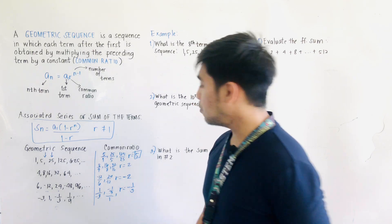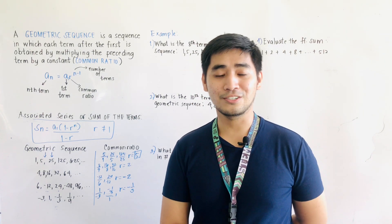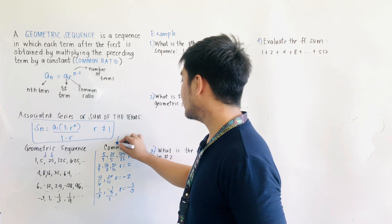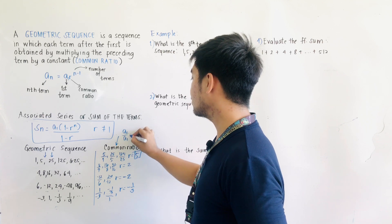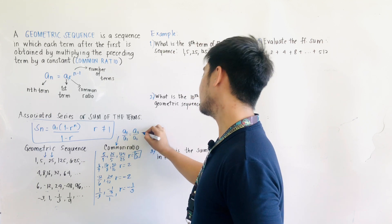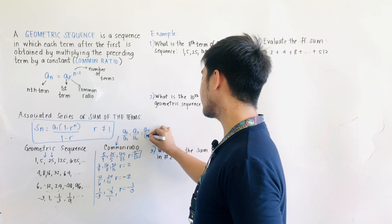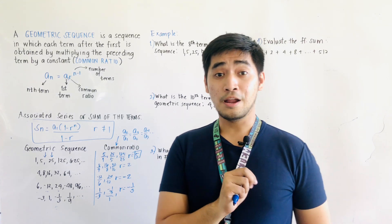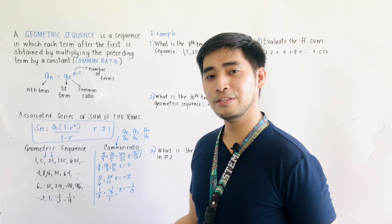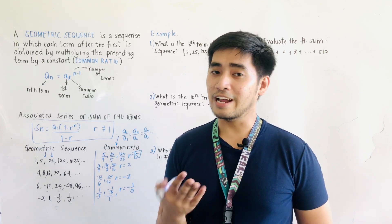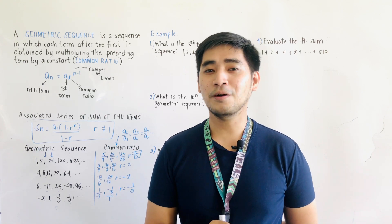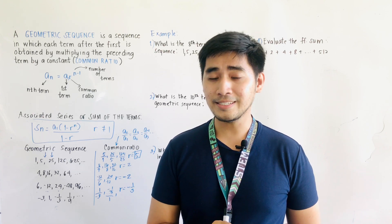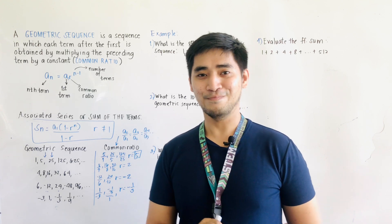This is how we solve for the common ratio. The formula is A2 over A1, which is also equal to A3 over A2, which is also equal to A4 over A3, and so on. You need to learn this basic skill — getting the common ratio — in order to proceed with solving geometric sequences.